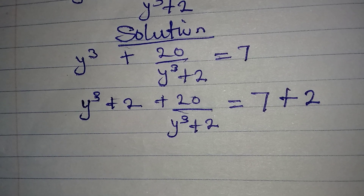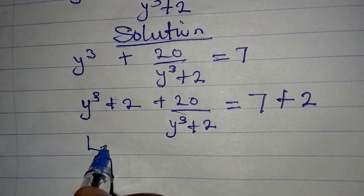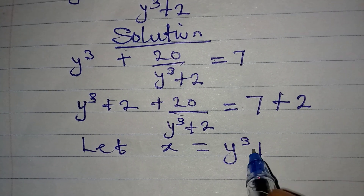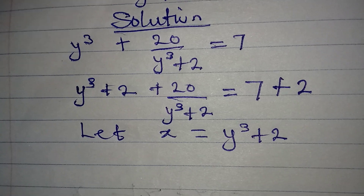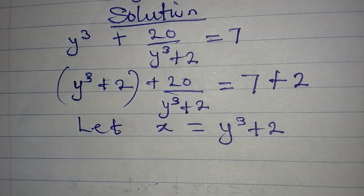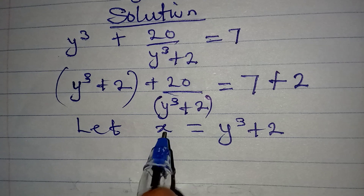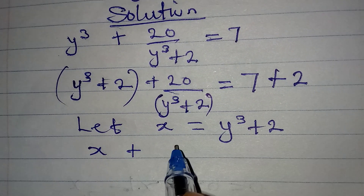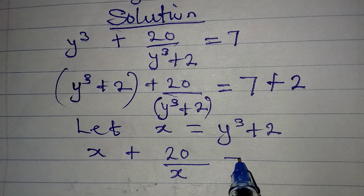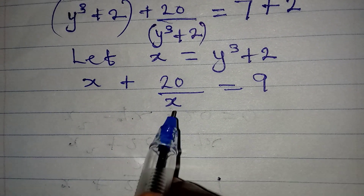Taking a step further, we now have y³ appearing in two places. So let x be equal to y³ + 2. In that case, in place of those expressions, I'll write x + 20 all over x, and this equals 9.